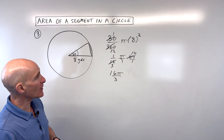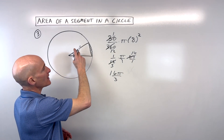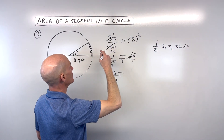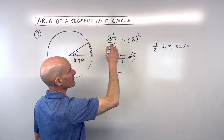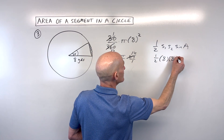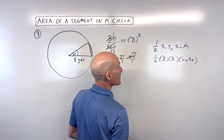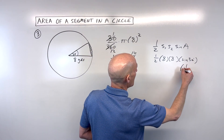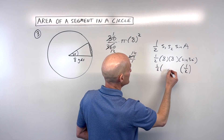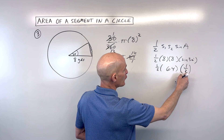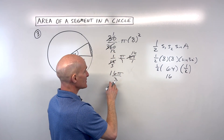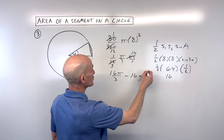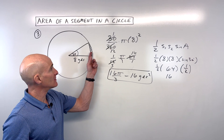For the area of the triangle, let's use the side-angle-side formula: one half times side 1 times side 2 times the sine of the included angle. That's one half times 8 times 8 times the sine of 30 degrees. The sine of 30 is one half, so we get 8 times 8 equals 64, and one half times one half is one fourth — one fourth of 64 is 16. So the area of the segment is 16 pi over 3 minus 16 yards squared.